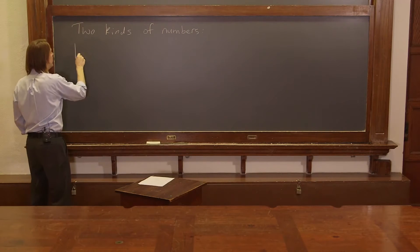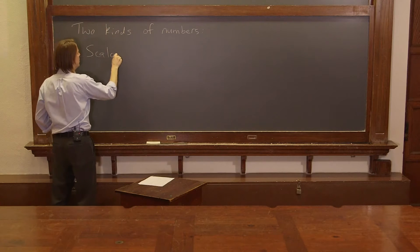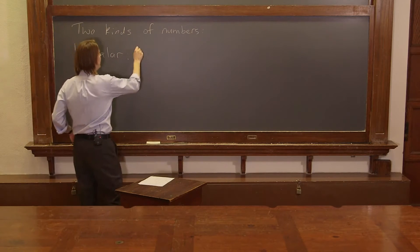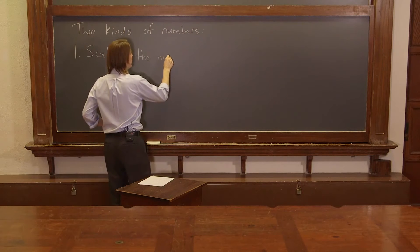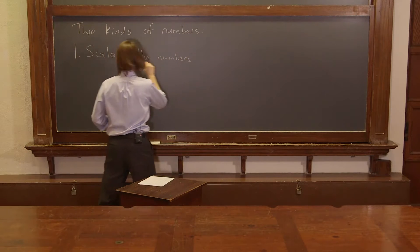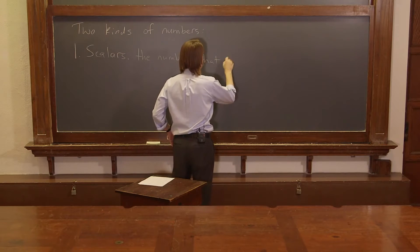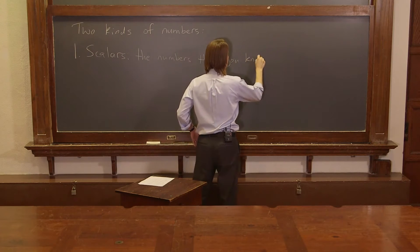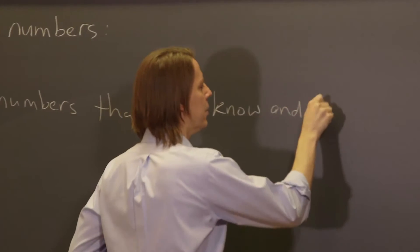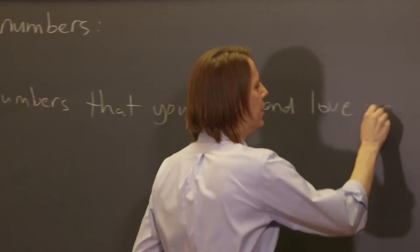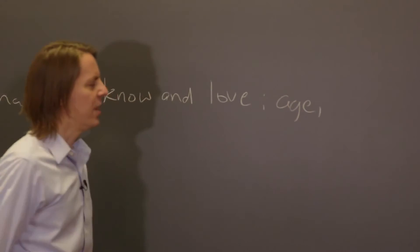The first kind is called scalar, and if I had to define a scalar I would say it is the numbers, the scalars, plural, the numbers that you know and love such as your age. Right, that's a scalar.